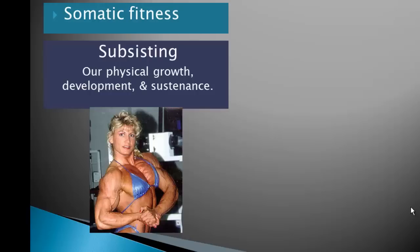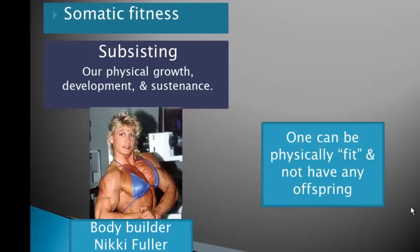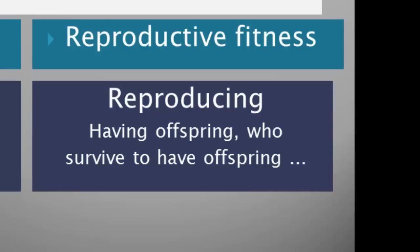Physical fitness can indeed be part of somatic fitness. This is a female bodybuilder named Nikki Fuller. Certainly she's physically fit, but from a Darwinian perspective it's not enough to be physically fit — and sometimes it's not even important to Darwinian fitness — because what matters is how many offspring you have, or how much you contribute indirectly to the fitness of your close relatives. So there's also what we call reproductive fitness, which has to do with having offspring who survived to have offspring who survived to have offspring, or in a more inclusive sense, assisting close relatives who have offspring who survived.